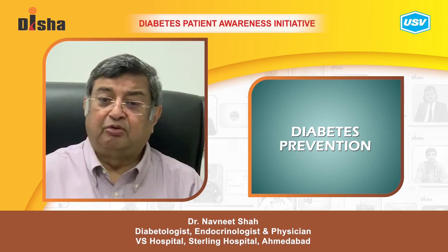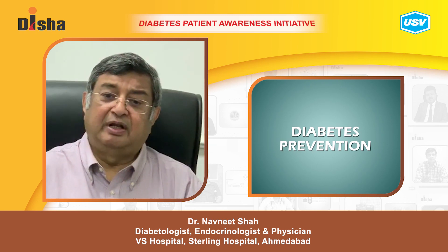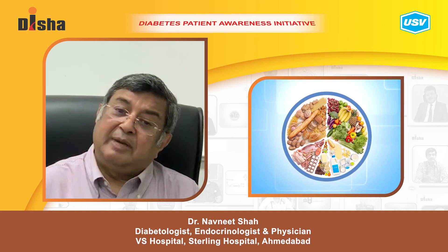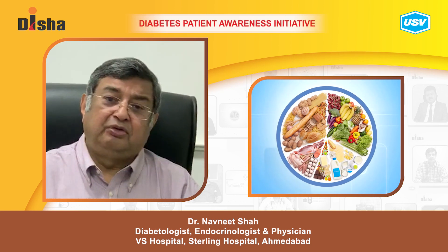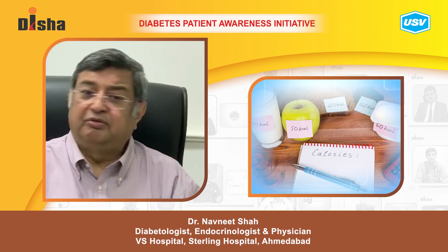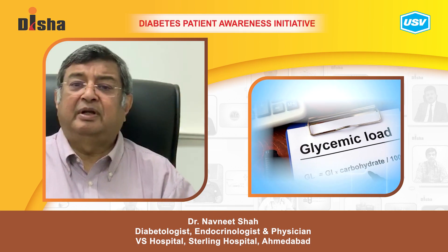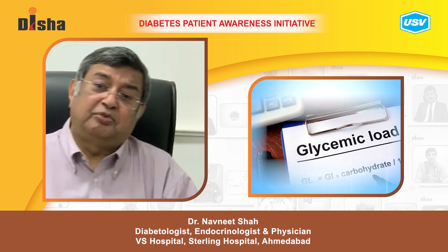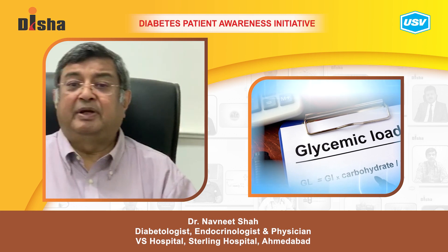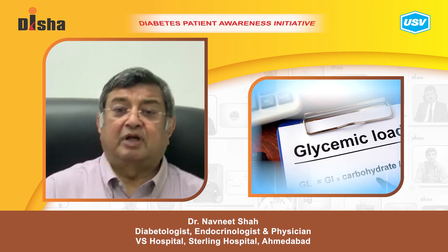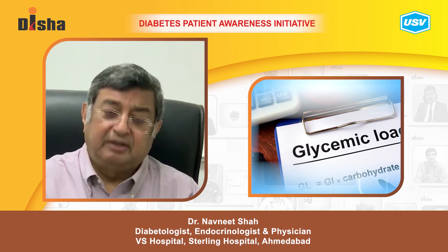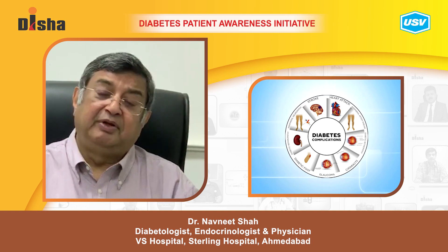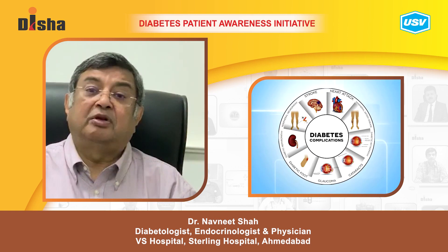Prevention involves early detection of diabetes, appropriate diet changes, and using appropriate calories. We must cut down on high glycemic and high carbohydrate foods in favor of more protein in our diet. Given the cardiovascular complications, patients with diabetes are very vulnerable to cardiovascular problems, making dietary changes especially important.